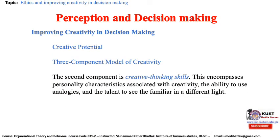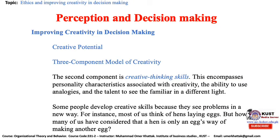The second component is creative thinking skills. This encompasses personality characteristics associated with creativity, the ability to use analogies, and the talent to see the familiar in a different light. Some people develop creative skills because they see problems in a new way — for instance, most of us think of hens laying eggs, but how many of us have considered that a hen is only an egg's way of making another egg? Being around creative others can inspire us, especially if we are creatively stuck. Having weak ties to creative people — knowing them but not well — facilitates creativity because they are a resource if we need them, but not so close as to constrain our own independent thinking.